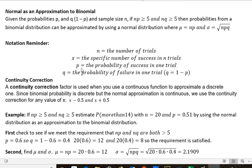Notation: n is the number of trials, x is the specific number of successes in n trials, p is the probability of success in one trial, and q is the probability of failure in one trial. We get q by subtracting p from 1.